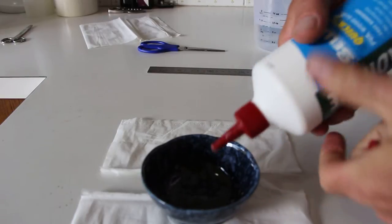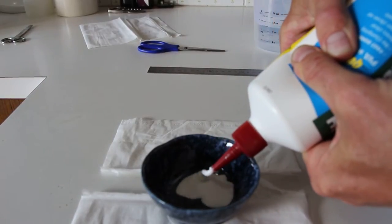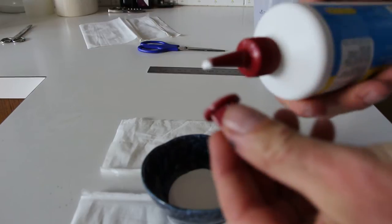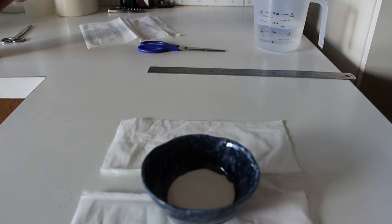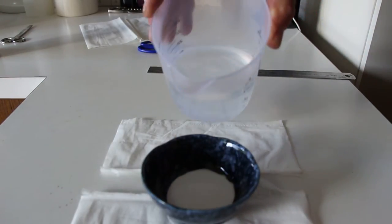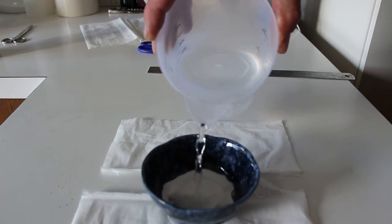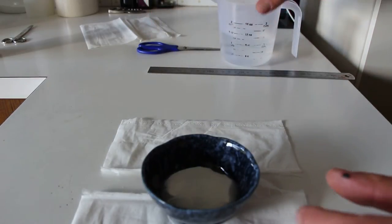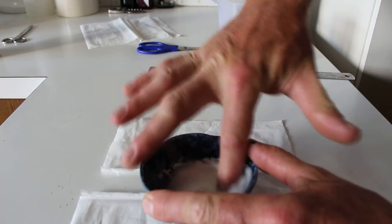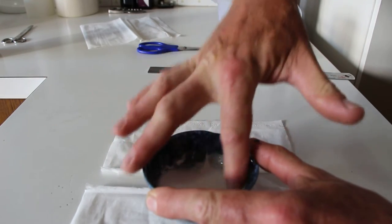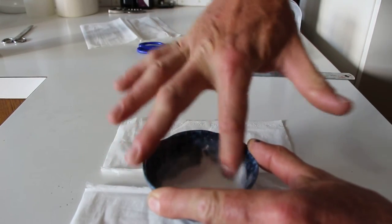It's just a squirt into the bowl and add water. You want to get it to a sort of a milky consistency. Just do it with your fingers, it's not harmful in any way, shape, or form.